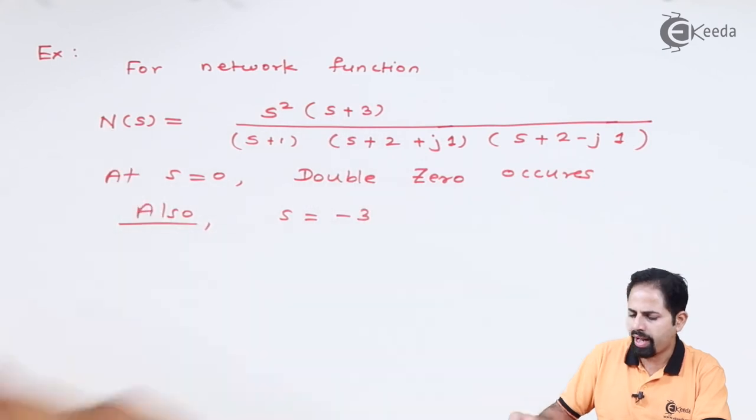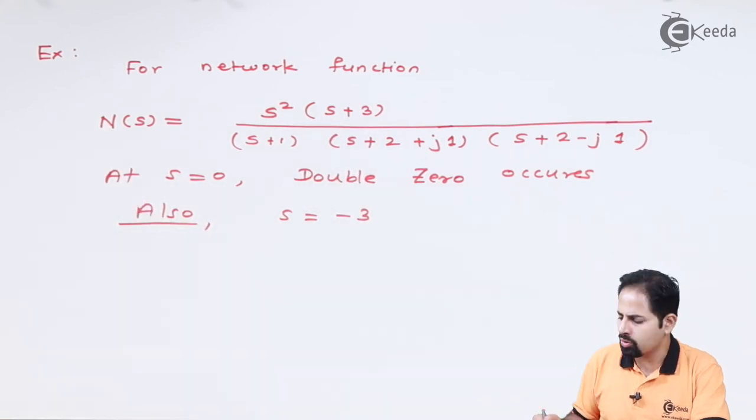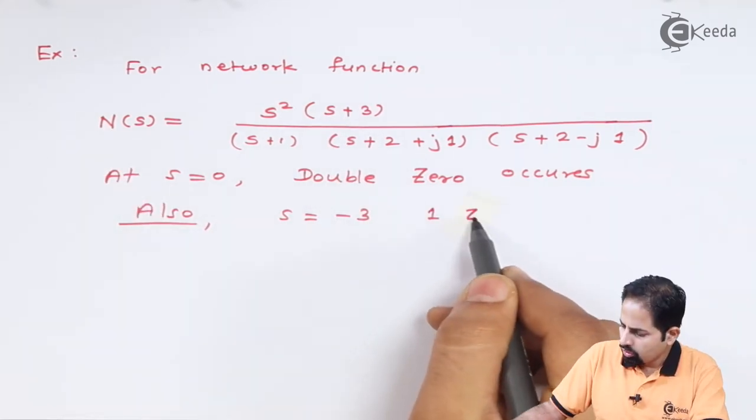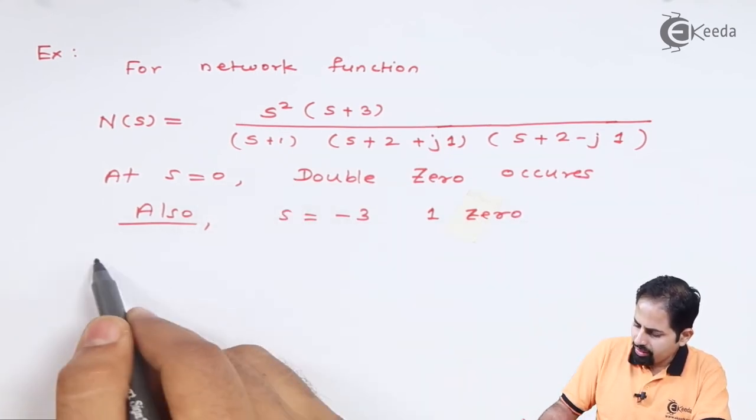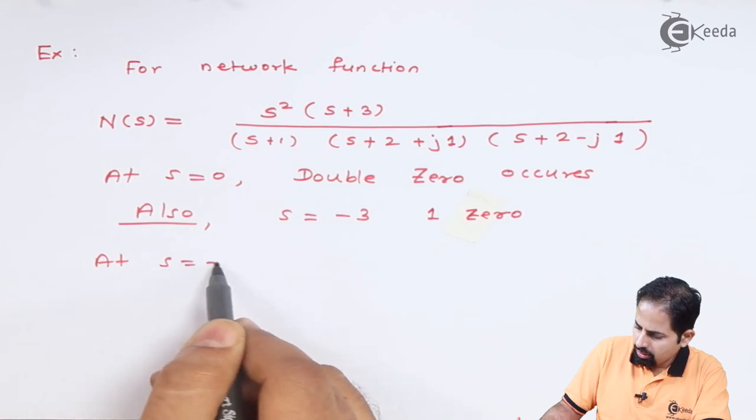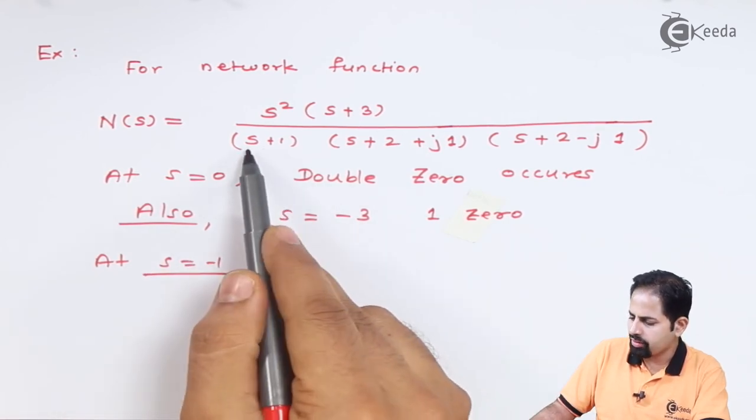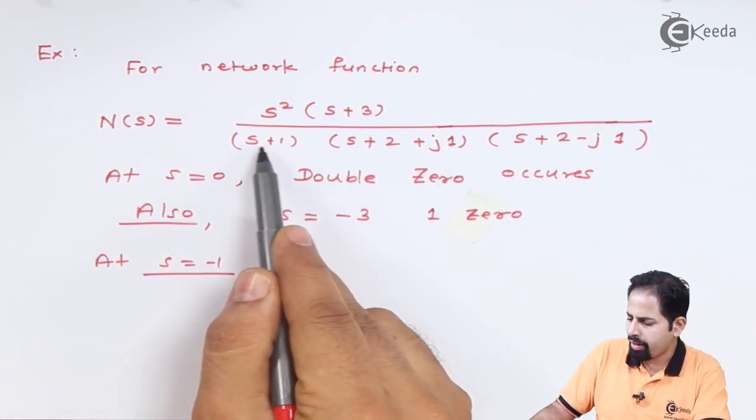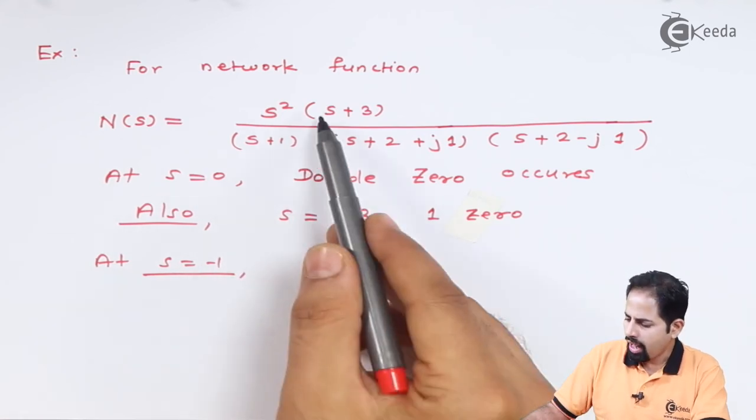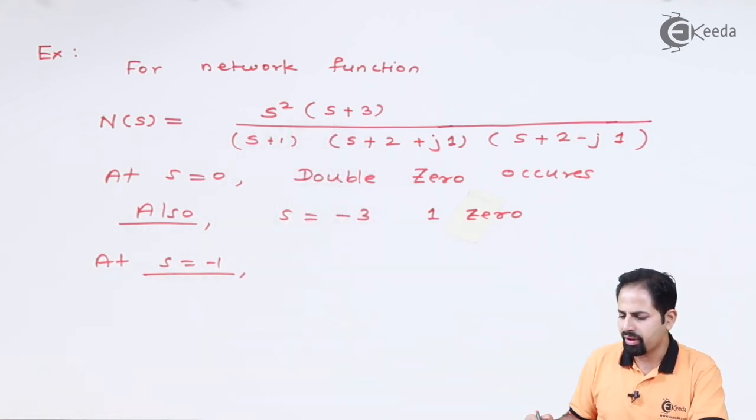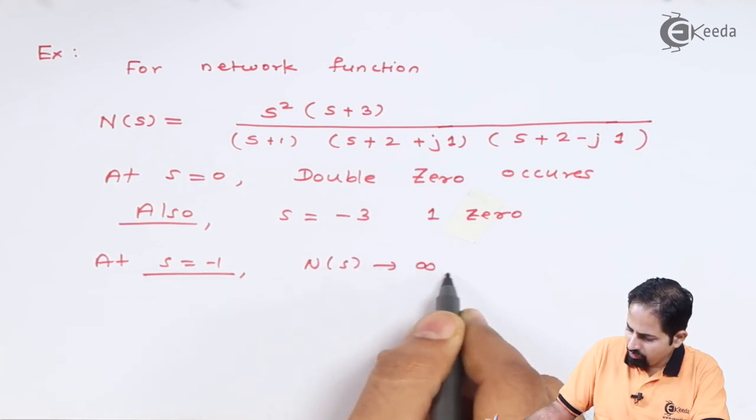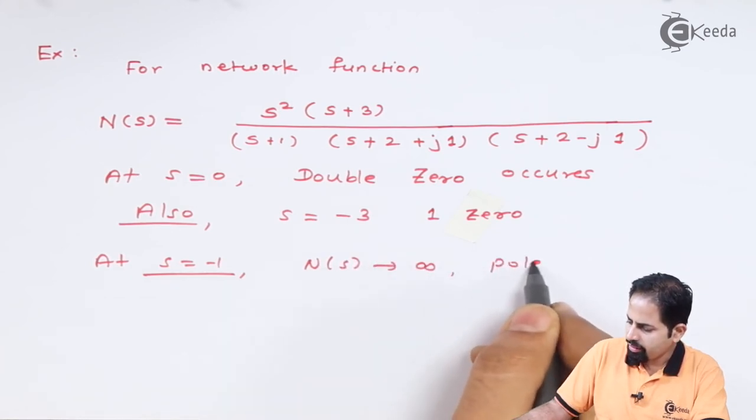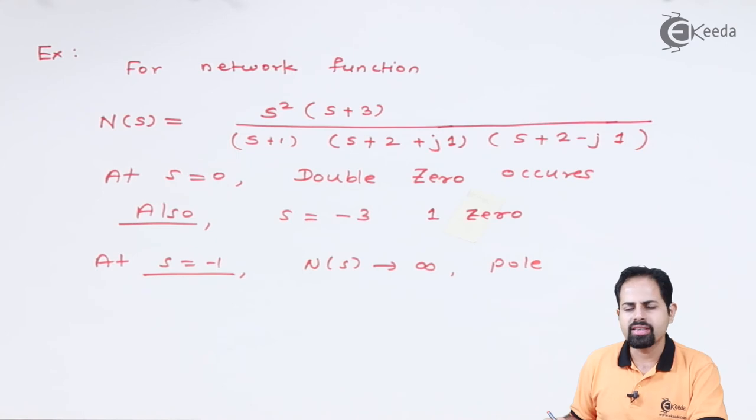So at s equal to 0, I have double zero. Also s equal to -3, this -3 plus 3 will become 0 and again my network function will drop to 0. So one zero occurs at s equal to -3. Similarly at s equal to -1, you can see if s is -1, -1 plus 1 will become 0 and this upon 0 will become infinity. So N(s) will tend to infinity, so you can say that pole occurs at s equal to -1.